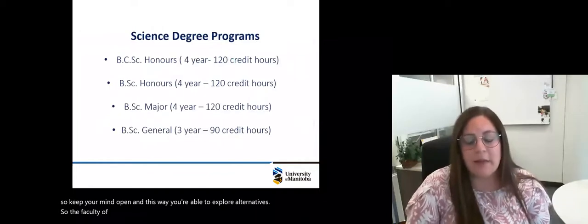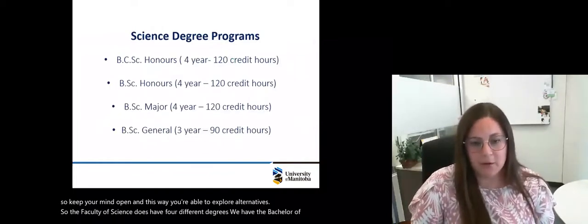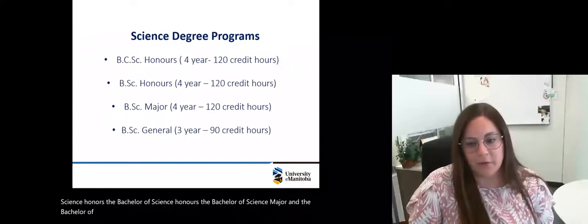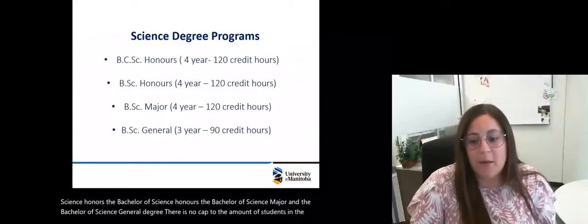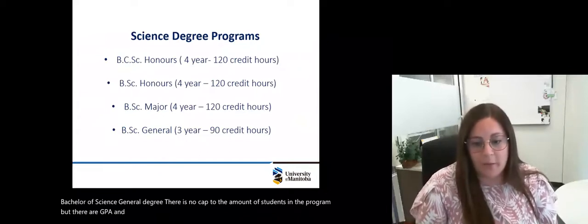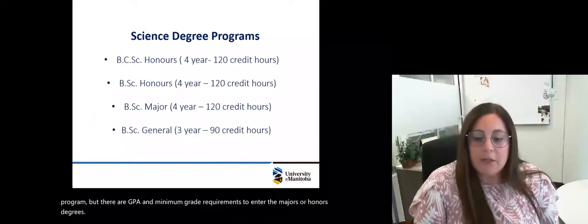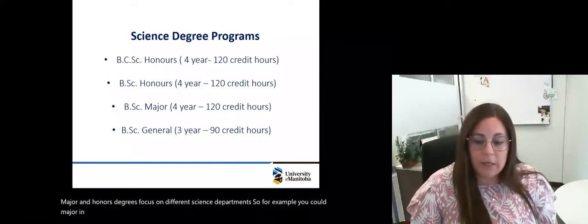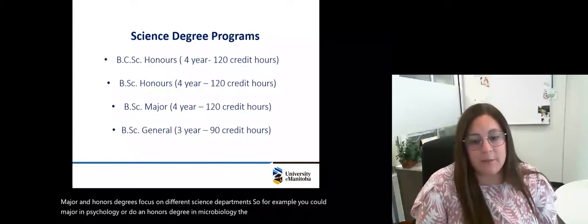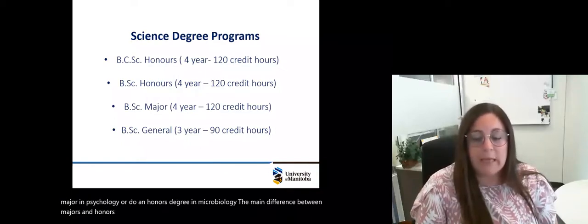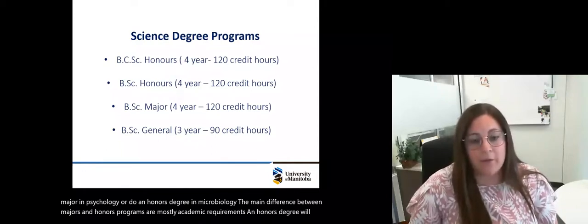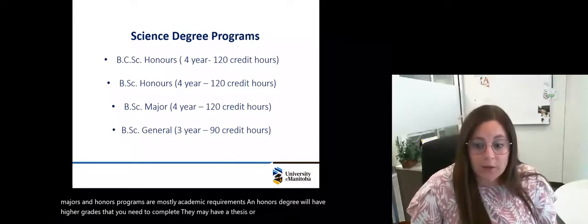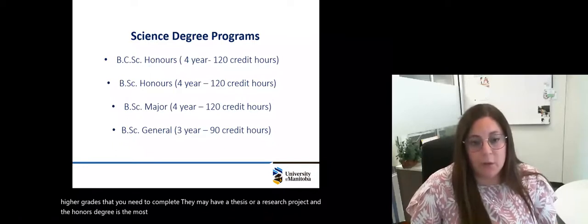The Faculty of Science does have four different degrees: the Bachelor of Computer Science Honors, the Bachelor of Science Honors, the Bachelor of Science Major, and the Bachelor of Science General degree. There is no cap to the amount of students in the program, but there are GPA and minimum grade requirements to enter the majors or honors degrees. Major and honors degrees focus on different science departments. The main difference between majors and honors programs are mostly academic requirements. An honors degree will have higher grades that you need to complete. They may have a thesis or a research project and the honors degree is the most direct route to a graduate program.